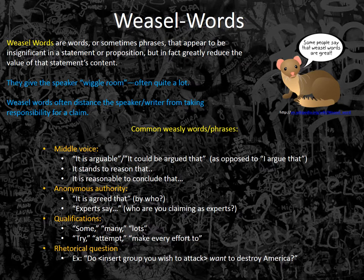Rhetorical questions can also be used as a weaseling method. If I want to imply something is true, I can ask it as a question without saying I'm suggesting it myself. For example: 'Mr. Rigby, is there any truth to the claim that you have a dog fighting ring in your basement?' I'm not saying it's true — but merely asking the question implies that it might be. This connects to the push-poll tactic discussed earlier, where asking whether voters would be less likely to vote for McCain if they found out he had an illegitimate black child implied there was some truth to it, when there was none.